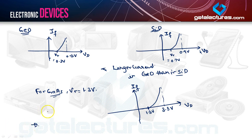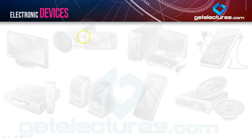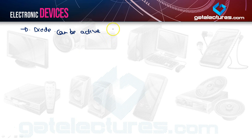To conclude, the diode is a non-linear and unidirectional device. If someone asks whether the diode is linear or non-linear, it is non-linear. The next question is whether it is active or passive — importantly, the diode can be active or passive depending upon the application.